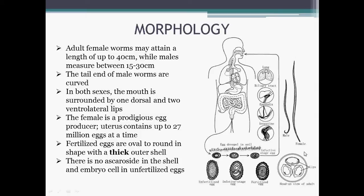In both sexes, the mouth is surrounded by one dorsal and two ventrolateral lips. Below the diagram of the adult male and female worm, you can see the head-on view of the adult — the dorsal lip at the top and the two ventrolateral lips at the bottom sides. The female is a prodigious egg producer, with the uterus containing up to 27 million eggs at a time.